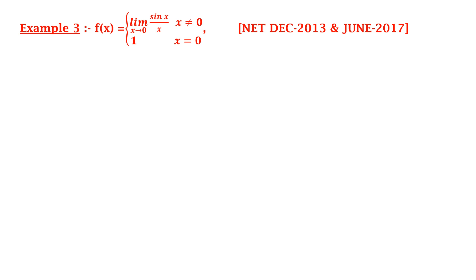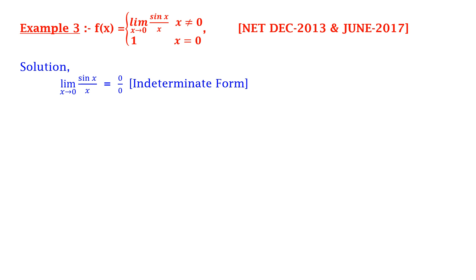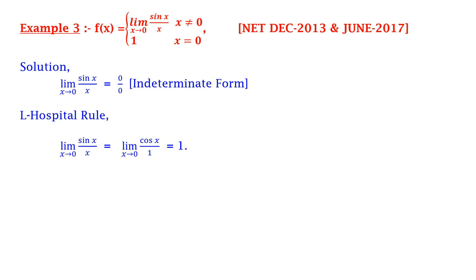Let us understand this better by an example. Example 3: f(x) = limit x tends to 0 of sin(x)/x, where x is non-zero, and 1 if x = 0. This question was asked in CSIR NET December 2013 and also in June 2017. Solution: if we apply limit x tends to 0 of sin(x)/x, we get 0/0, which is an indeterminate form. So we apply L'Hôpital Rule: limit x tends to 0 of sin(x)/x = limit x tends to 0 of cos(x)/1. Now we apply the limit and get limit x tends to 0 of cos(x)/1 = 1.